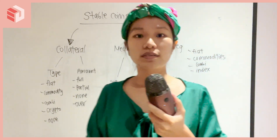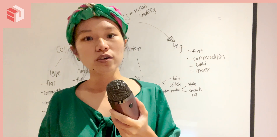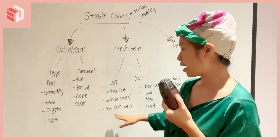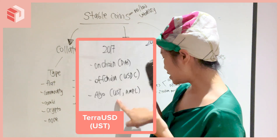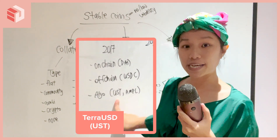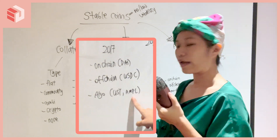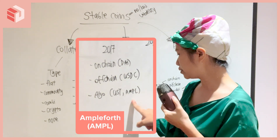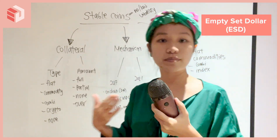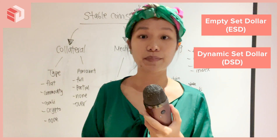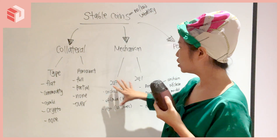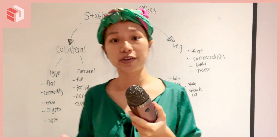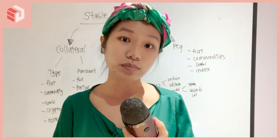Lastly, we have algo stablecoins. Algo stablecoins can be classified as seigniorage shares or different rebasing mechanisms. For that, we have UST from Terra's Lunar network, or Ampleforth, which is also very popular. You also have things like Empty Set Dollar and Dynamic Set Dollar — ESD and DSD. So that was the 2017 classification of the different mechanisms for creating stablecoins.